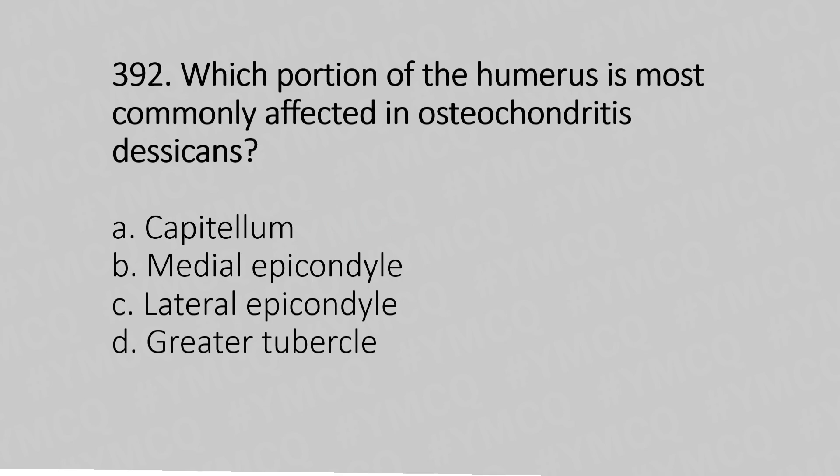Question 392: Which portion of the humerus is most commonly affected in osteochondritis dissecans? Option A: capitulum. Option B: medial epicondyle. Option C: lateral epicondyle. Option D: greater tubercle. The answer is Option A: capitulum.